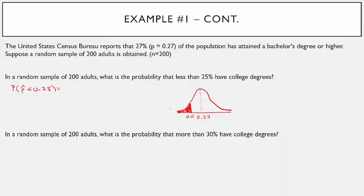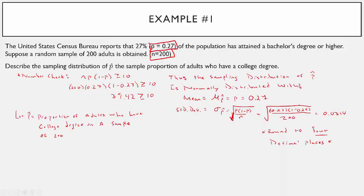We use normal CDF on the calculator. It's a left-tail problem, so the lower bound is negative 9999, the upper is 0.25, the mean is mu sub p-hat which is 0.27, and the standard deviation sigma p-hat is 0.0314.